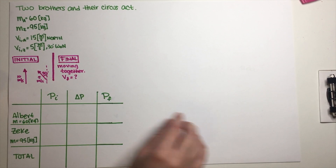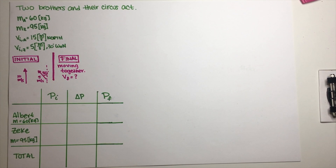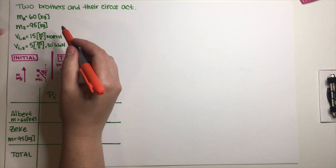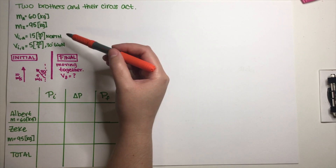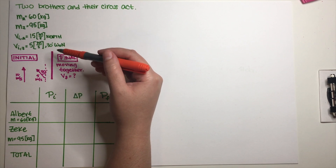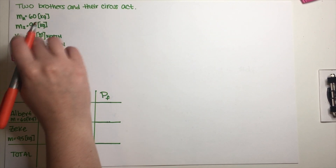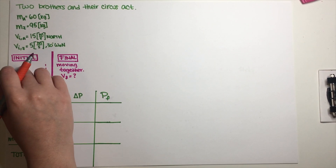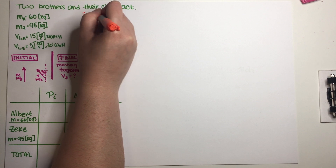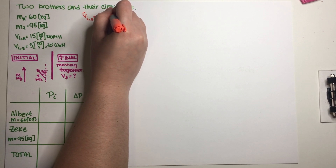The first thing we can do is fill out the initial momentum column of the momentum chart. We have the masses for both Albert and Sig and their velocities. We basically have to take these velocities and change them into vector form, because momentum is a vector quantity. We need to separate them into x and y components. For Albert this is very easy because he is going straight north, so his velocity in vector form is just (0, +15) since he's going north.